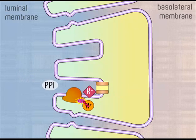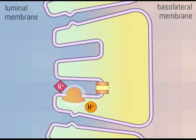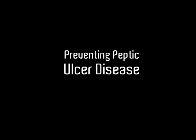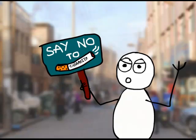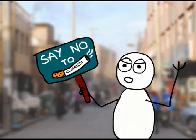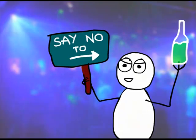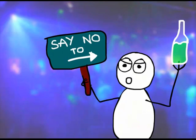PPIs form a covalent disulfide bond with the hydrogen-potassium ATPase pump, leading to its irreversible inhibition. Until a new pump is made, gastric acid secretion is halted. Preventing peptic ulcer disease is simple: individuals are advised to refrain from smoking, avoid improper use of NSAIDs, and avoid or limit alcohol and caffeine intake.